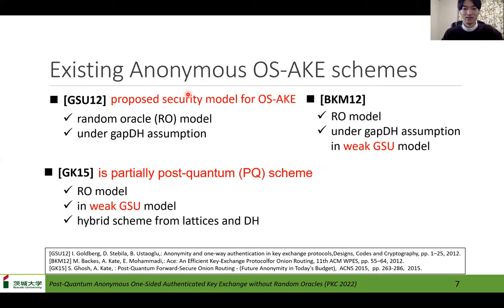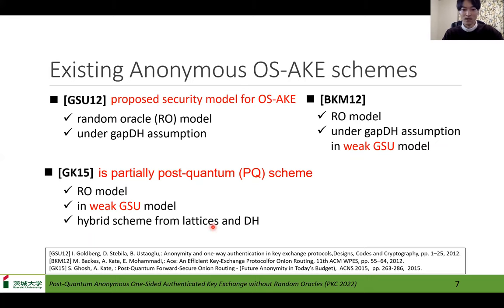Next, I'll show the existing anonymous OS-AK schemes. The GS-12 proposed security model for OS-AK used in this study. The BCM-12 and GK-15 schemes are guaranteed under a weaker freshness setting than the original one. The GK-15 consists of RLTS and DH. In some cases the scheme is not post-quantum, so it is a partially post-quantum scheme. These schemes are proven in the random oracle model.